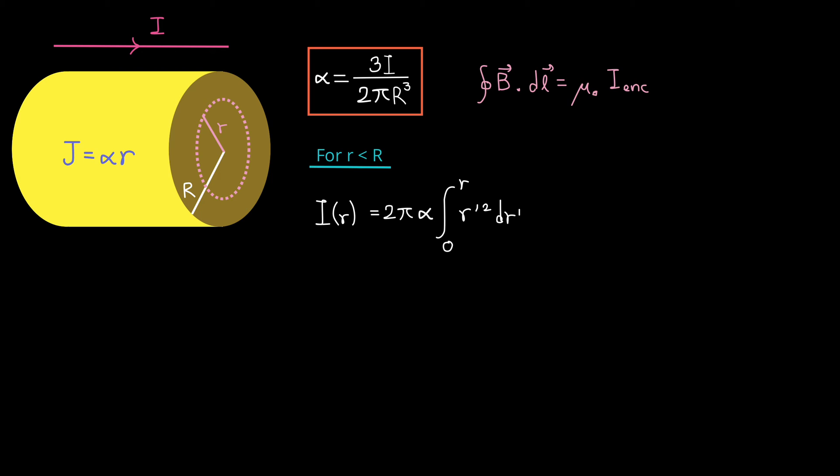Because we're calculating the value of the current at a distance r from the center of the circle. So we use r prime for our integration variable. Let's take the integral. It's the same as before. Taking the integral, we get i as a function of r equal to 2 over 3 pi alpha r cubed. Now let's go back to Ampere's law.